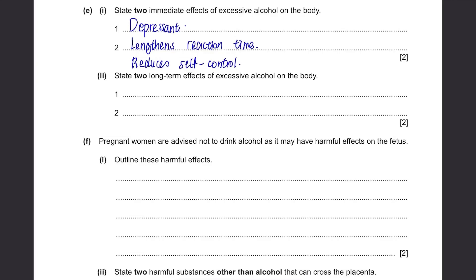State 2 long-term effects of excessive alcohol on the body. These are negative effects. You can get addicted to alcohol, which can ruin your life. There will also be liver damage and infections or diseases in your liver.